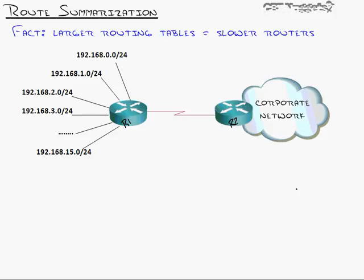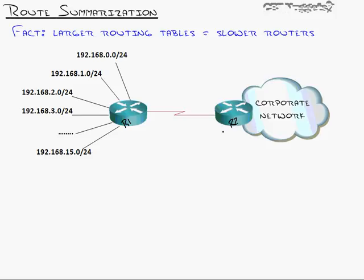Does Router 2 really need to know that the 1.0 network went down? If Router 1 knows it's down, Router 2 will send the first packet to Router 1, and Router 1 will reply with ICMP unreachable — you can't get there from here. Router 1 will take care of any packets going to that network. So in the big picture, it really doesn't make much sense for Router 2 to know the specifics about those networks.